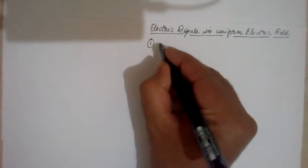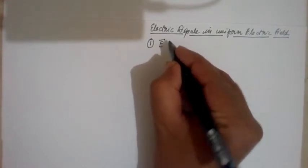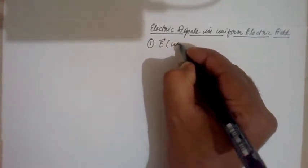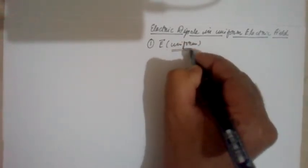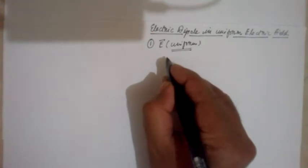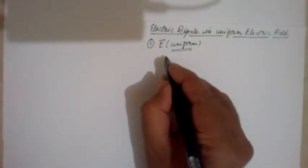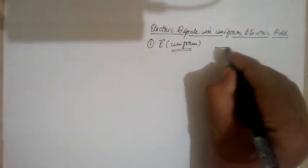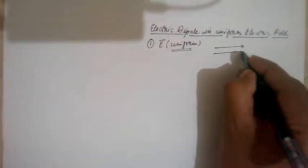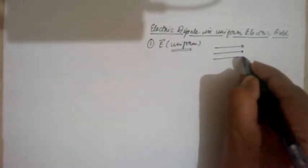Electric Dipole in Uniform Electric Field. A uniform electric field has constant magnitude and direction everywhere. It is represented by parallel equispaced lines.